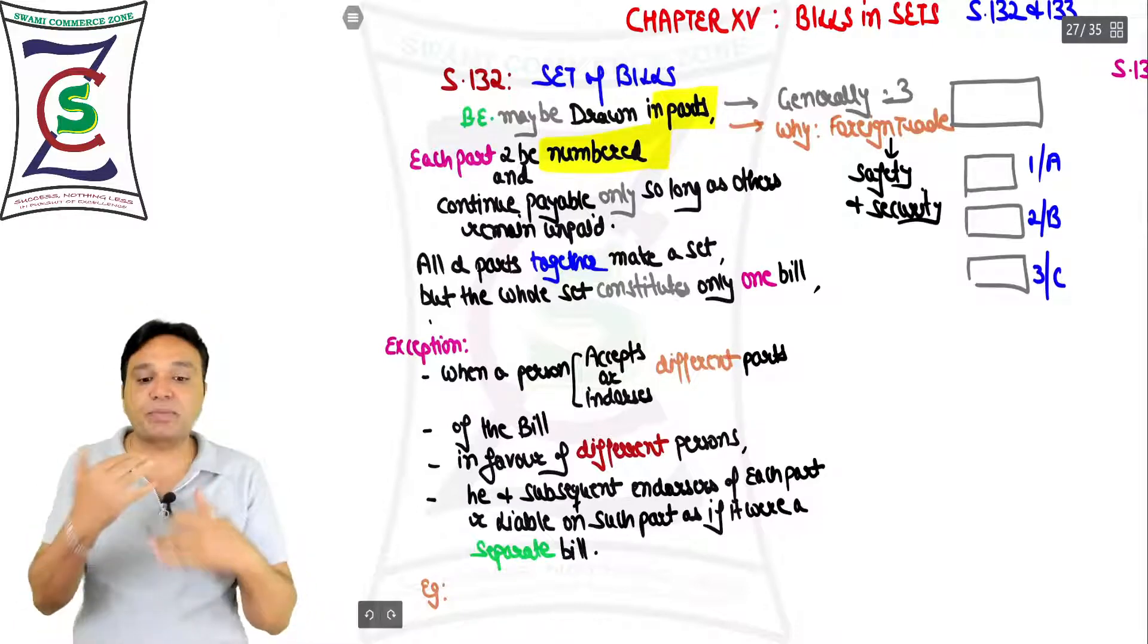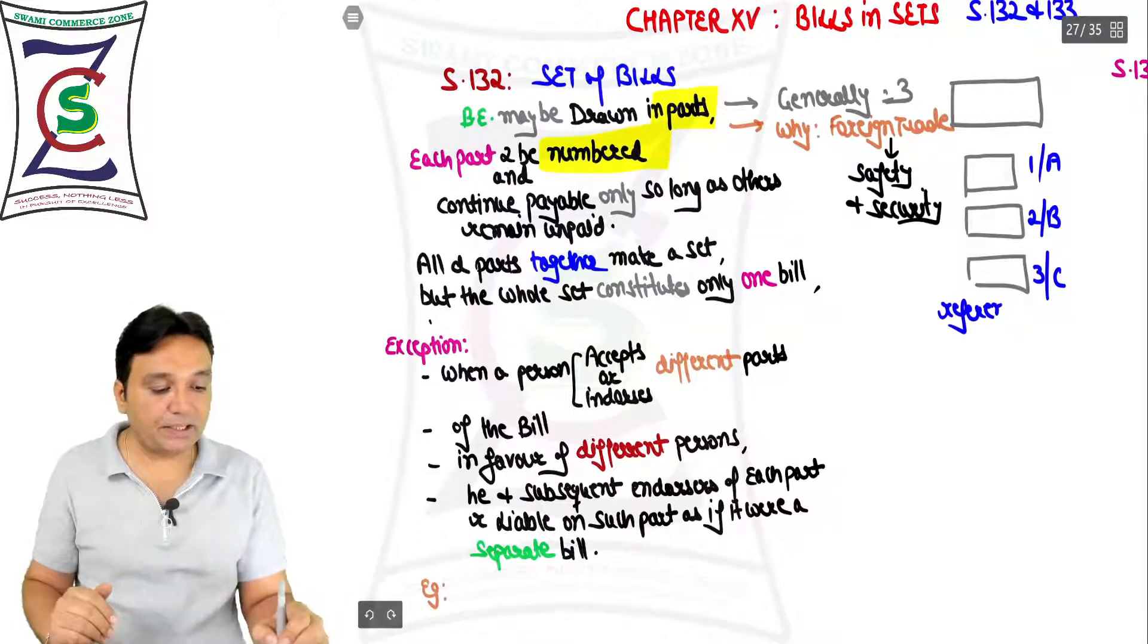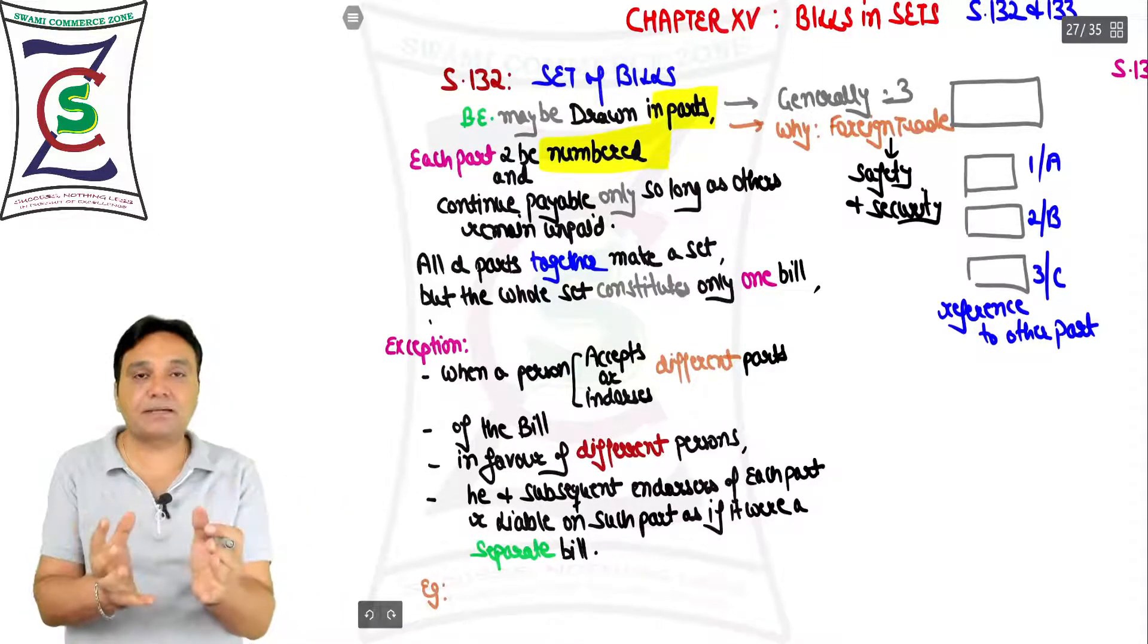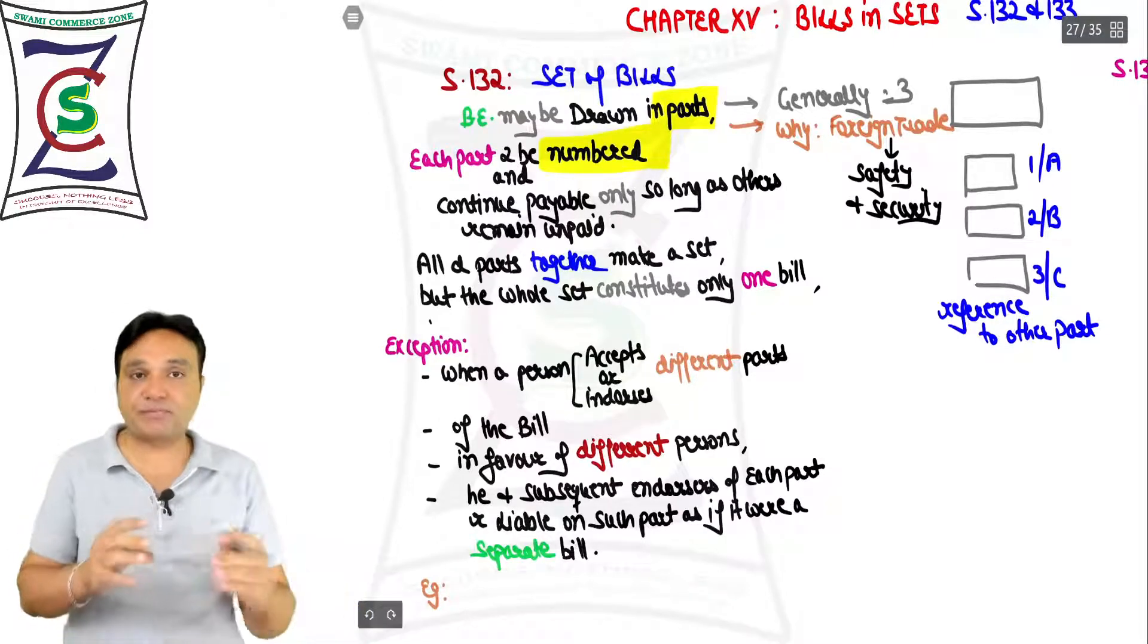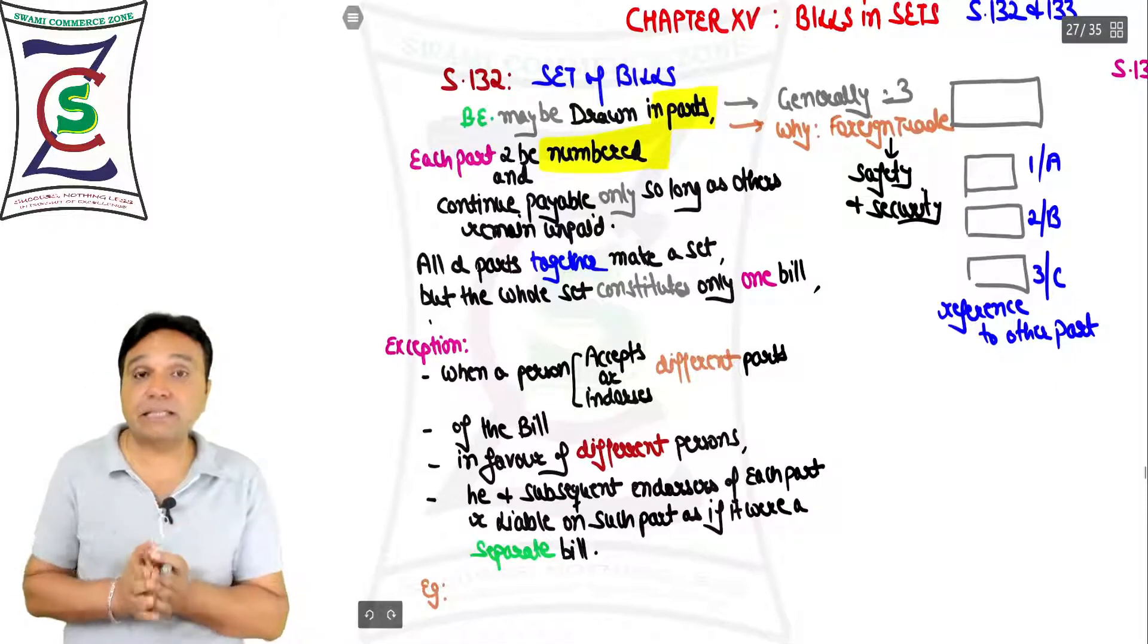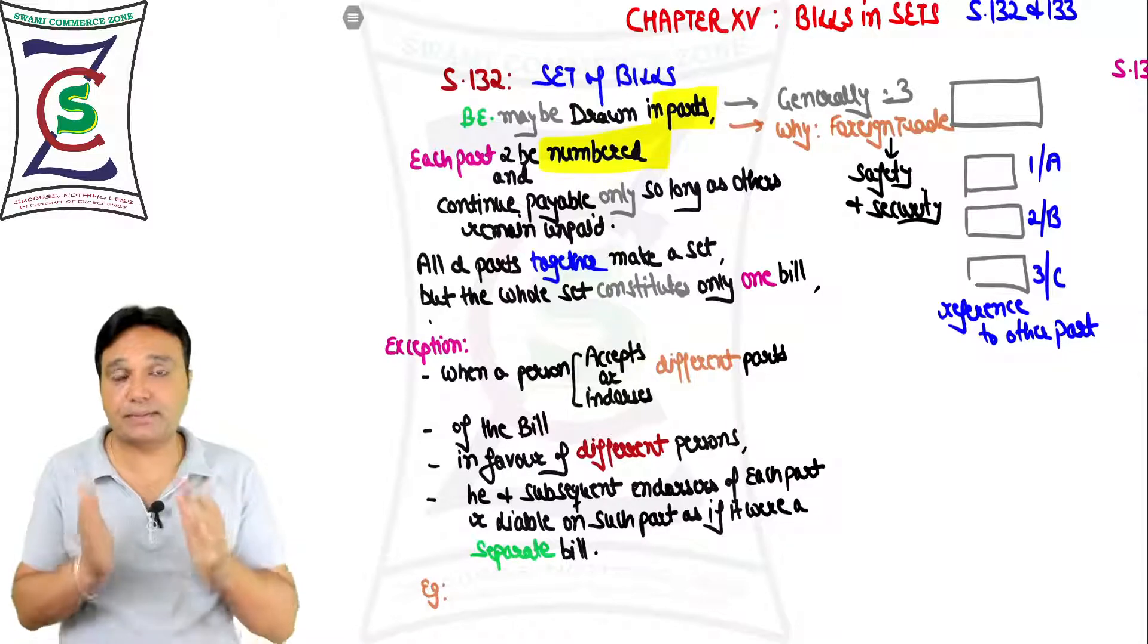You make all the parts - one, you may call it A, you may call it two, and then B, three - B or C. There has to be some reference. Each part to contain reference to other parts. There has to be coordination, harmonious construction. This only talks about bills, not the note and the check.